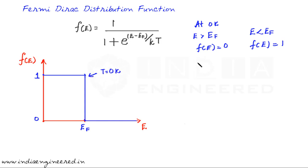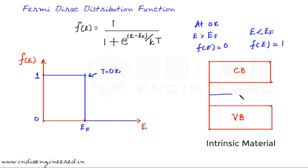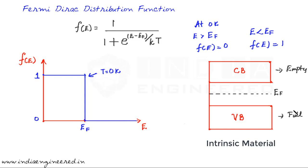We have also explained this in the context of the energy band diagram, where we have a valence band and a conduction band, and the Fermi level lies at around the middle of the band gap. At zero Kelvin, the conduction band is empty and the valence band is full, which is in accordance with the Fermi-Dirac distribution function.